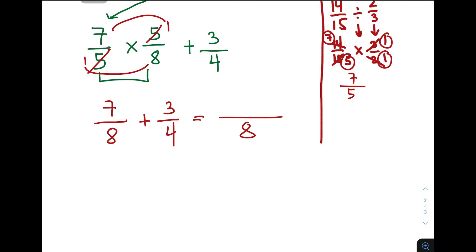8 divided by 8 is 1 times 7. Divide, multiply. So, 8 divided by 8 is 1 times 7, that is 7. Plus, 8 divided by 4, which is 2, times 3, that is 6. So, simplifying your numerator, that is 13 over 8.